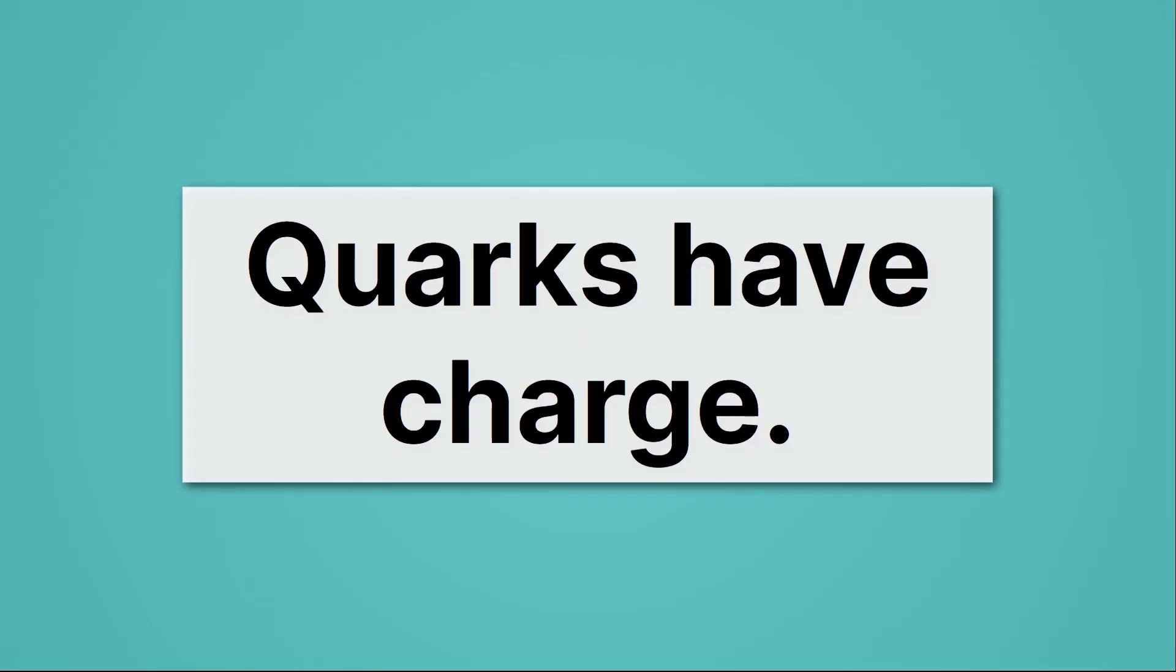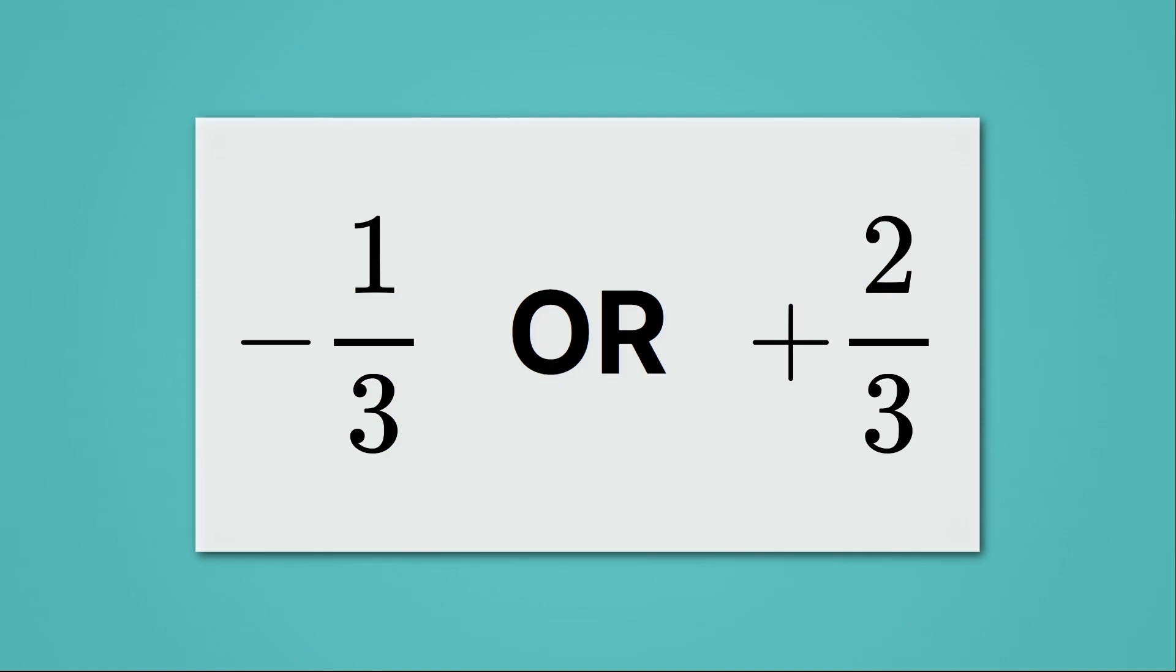You should also know that quarks have charge, just like electrons and protons have charge. Their charges, though, come in two different forms, either minus one-third or plus two-thirds. I know it might seem a little weird to have fractions of charges, but don't worry, it's totally fine. And you'll see how these give us the nice, uniform plus one and minus one we're used to in just a second.